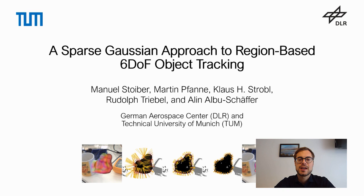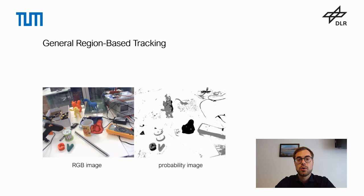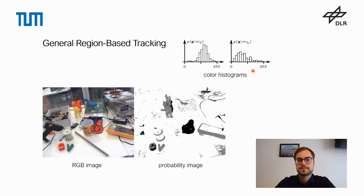The general goal of Six-Degree of Freedom Object Tracking is to estimate both the rotation and translation of an object relative to the camera from consecutive images. For region-based tracking, we use image statistics to differentiate between a foreground region that corresponds to the object and the background region. As image statistics, we typically use color histograms, one for the foreground and one for the background. Based on those histograms, we are able to estimate the probability that the pixel belongs to the foreground or to the background.